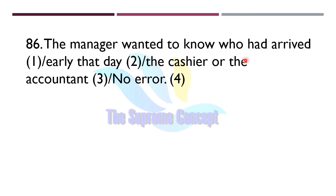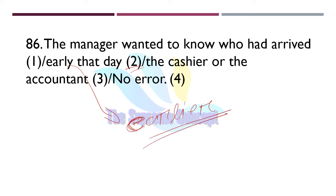Question number 86: 'The manager wanted to know who had arrived early that day, the cashier or the accountant.' The error lies in part number two — instead of 'early', we will use its comparative form 'earlier'. Since we are comparing two people — the cashier and the accountant — we use the comparative degree 'earlier'.